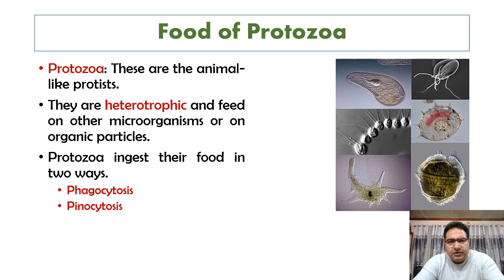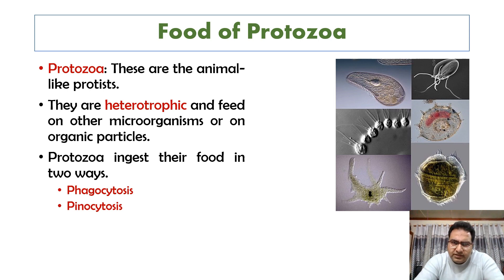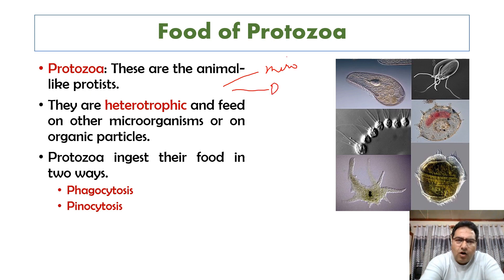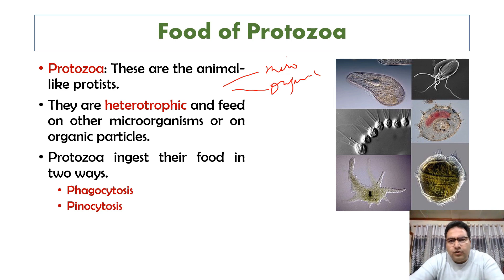Now, first of all, we shall be talking about the food of the protozoa. Protozoans are unicellular eukaryotes which lack a cell wall. They are heterotrophic and feed on other microorganisms or organic particles. They ingest their food in two ways.